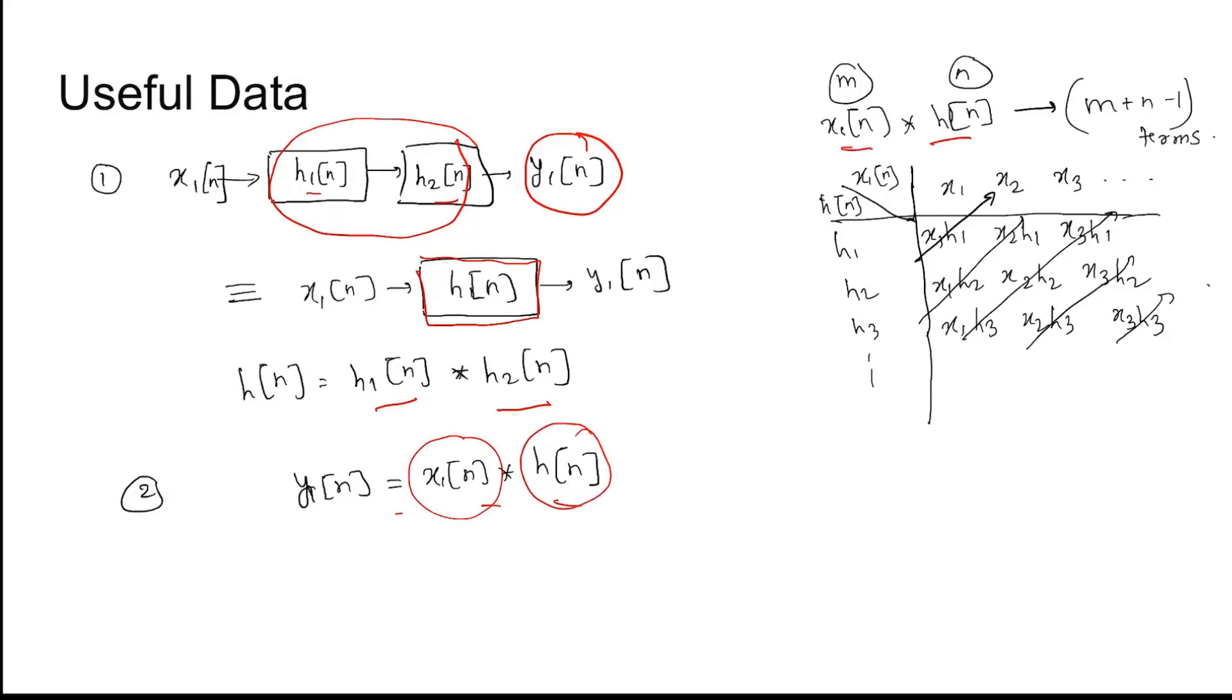To find out the convolution between two discrete time domain signals, we write it in the tabular form. This is the tabular form for estimating convolution results in discrete time. x(n) is written like this, then h(n) is written like this. x(n) values are written here and h(n) values are written here. Then we perform the products: h1 into x1, h2 into x2, h1 into x3, and so on.